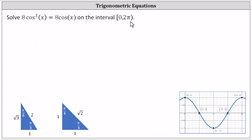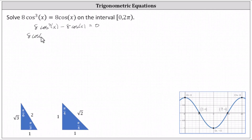For the first step, let's subtract eight cosine x on both sides and set the right side equal to zero. This gives us eight cosine cubed x minus eight cosine x equals zero, and now we'll factor the left side by factoring out the greatest common factor of eight cosine x.